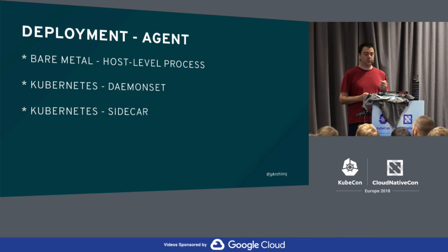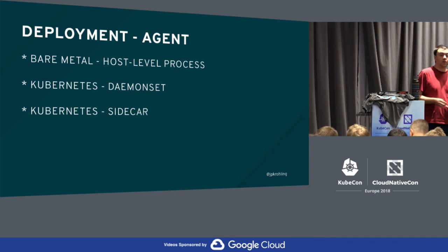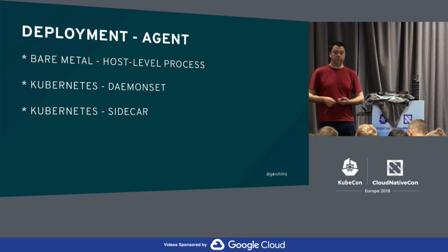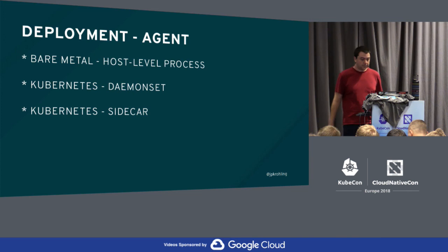With the sidecar approach, the second container in the pod is the agent, and the main application container sends data to the agent via localhost. That agent then makes a long-lived connection to the collector. If you have 10 collectors and 10 instances of your service, you have 10 agents, each with a long-lived connection — meaning in theory you use all your collectors.